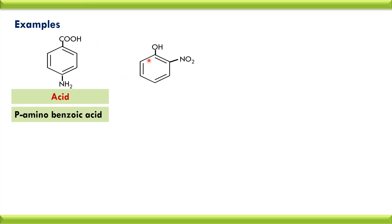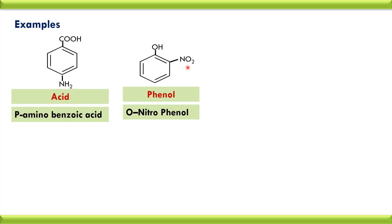In this compound there are again 2 functional groups: an OH group which is phenolic in nature, and a NO₂ group. In that case, the phenolic OH has higher priority than the nitro group, and the nitro group is considered as a substituent. Therefore the type of the compound is phenol. The name of the compound is orthonitrophenol — the NO₂ group is present at the ortho position. It shows the properties of a phenolic compound.